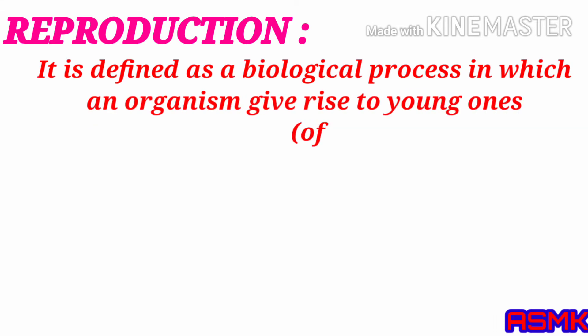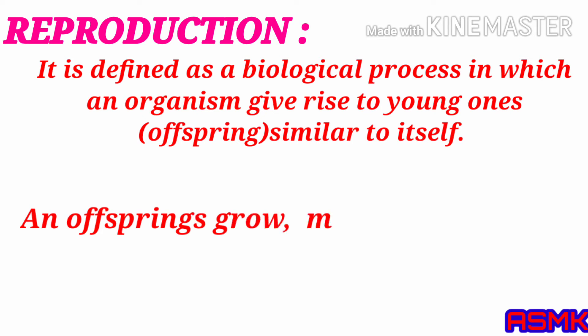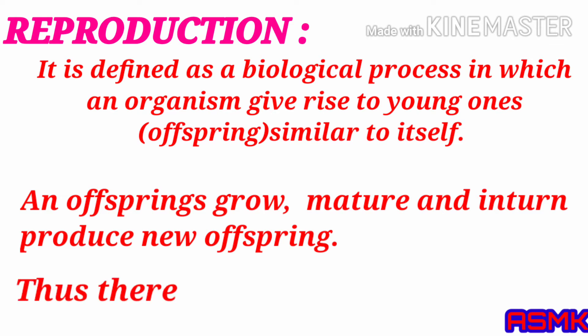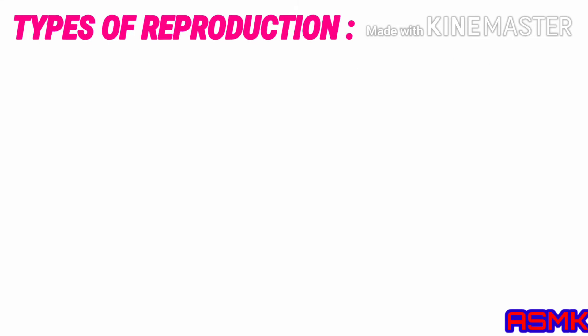Reproduction is defined as a biological process in which an organism gives rise to young ones, that is offspring, similar to itself. The offspring grow and mature and in turn produce new offspring. Thus there is a cycle of birth, growth, and death.